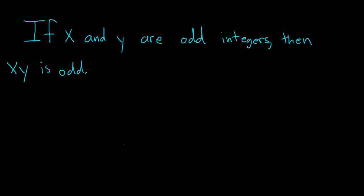Hi everyone. In this video, we're going to do an example of what's called a direct proof. So in this proof, we're going to prove that if x and y are odd integers, then x times y is also odd.